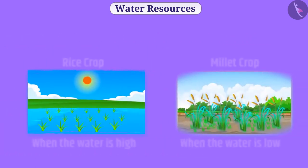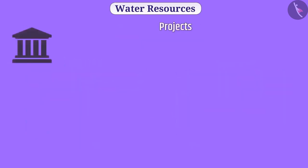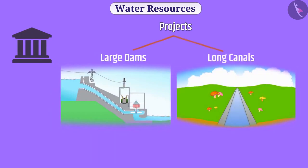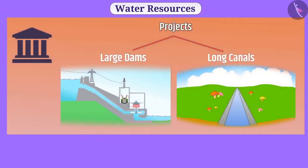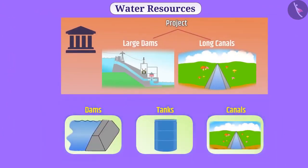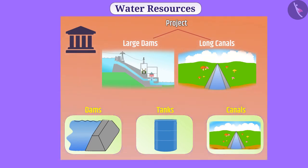These reservoirs were managed by local people so that water would be available throughout the year. With centuries of experience, proper cropping patterns were adopted by looking at the availability of water. However, large projects such as large dams and long canals constructed by the government diminished the importance of these local methods, and local people lost control over them.